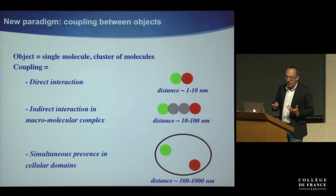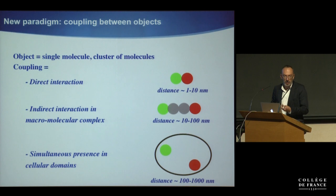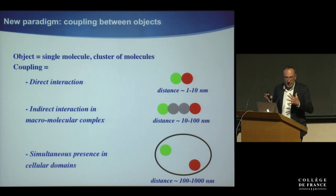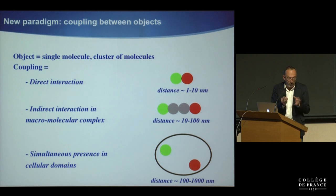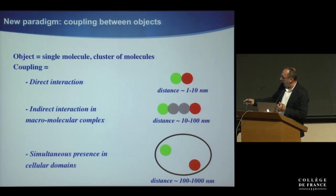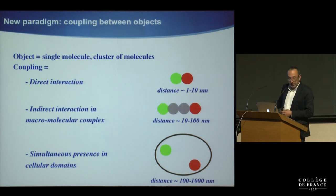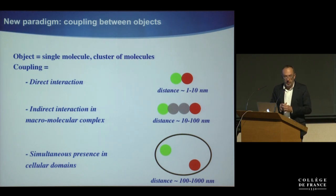What we propose is not to talk about co-localization anymore in terms of overlapping, but rather talk about coupling. Because coupling allows you to address all these different ranges of interactions that you can find when you look at two molecular distributions. You can have direct interactions where the distance is really close, in the range of 1 to 10 nanometers — almost physical contact. But you can also have indirect interactions in macro complexes where the distance is much larger. And you can cope with the problem of simultaneous presence in the same cellular domain with distances which can be very large. Coupling is a way of addressing how two distributions are related to each other spatially — if not temporally — in a much more general sense.